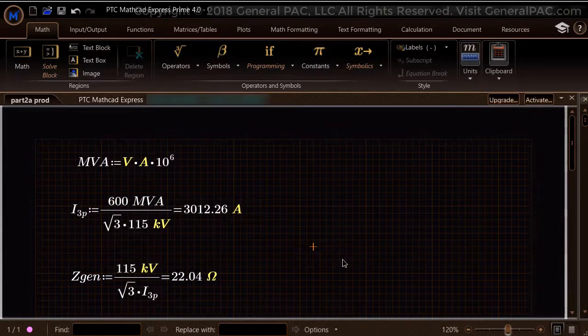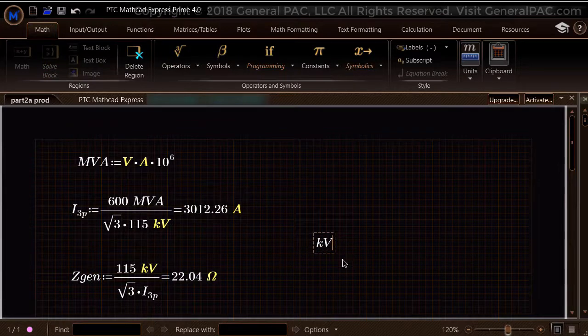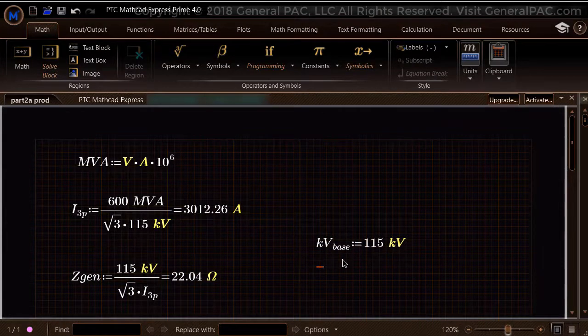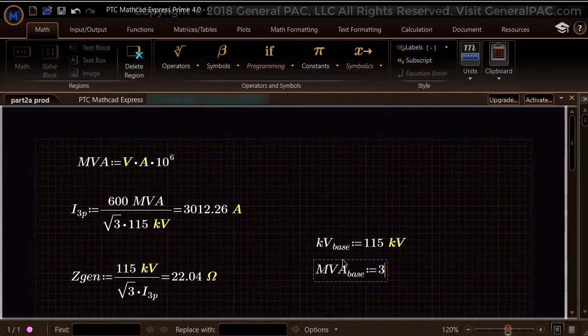Hand calculated short circuit currents are best performed in the per unit system. So let us select the base units. We have already selected the base for the voltage which is 115 kV. Let us strategically select a power base of 30 MVA.